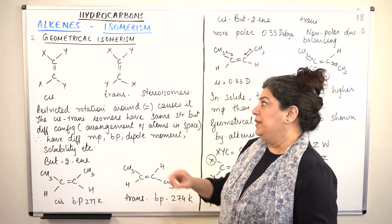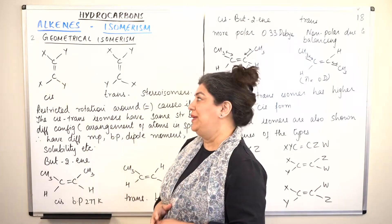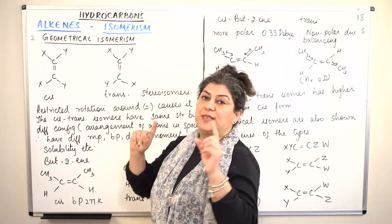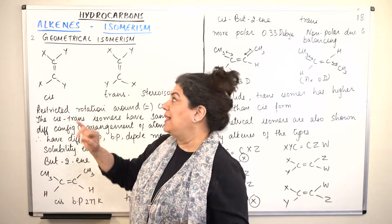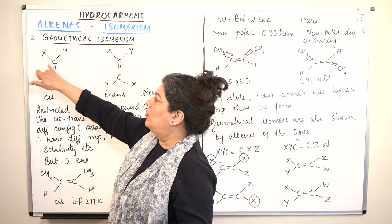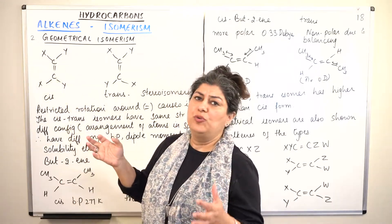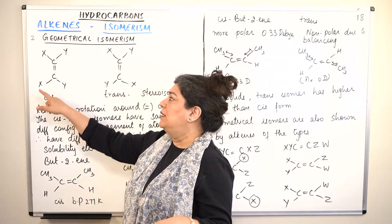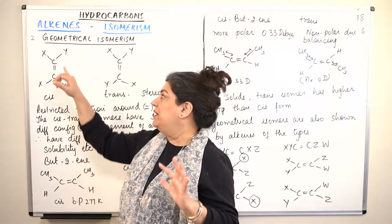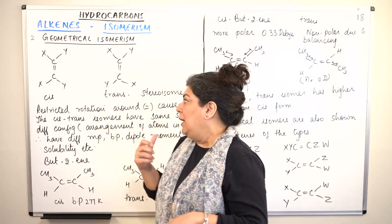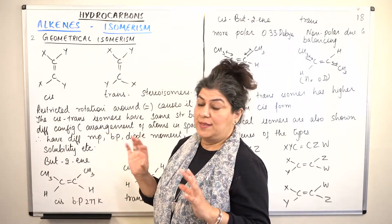Let us take this example. Imagine there is an alkene where these two carbon atoms have a double bond between them, and they are attached to two different groups — the same on both sides. This carbon is attached to a group called x and a group called y. Similarly, the other carbon is also attached to a group x and a group y. So there are two possible arrangements in this case.